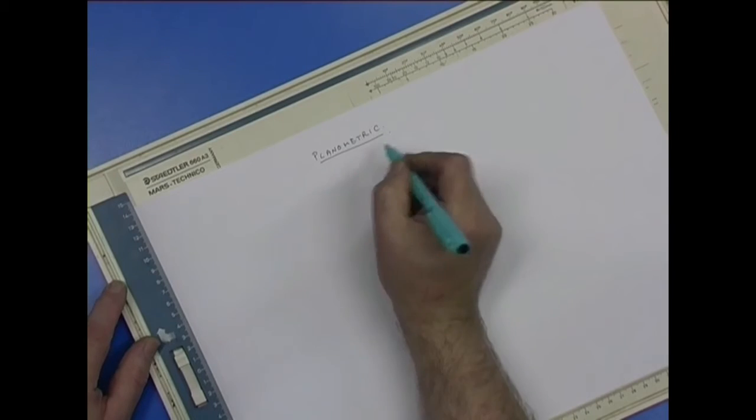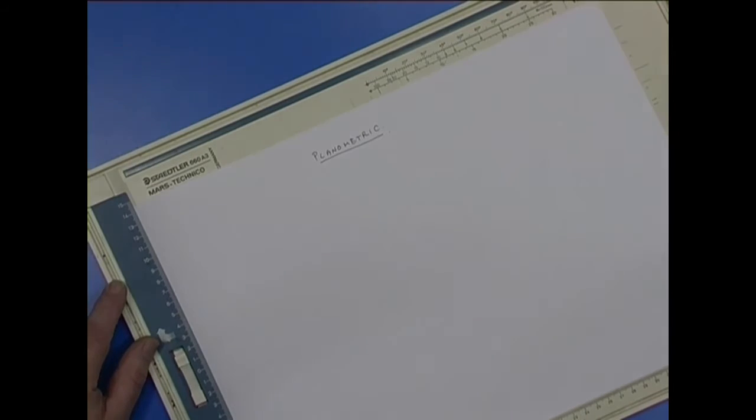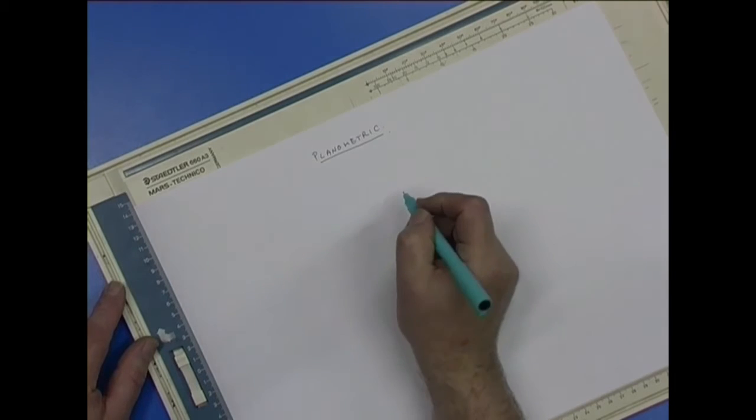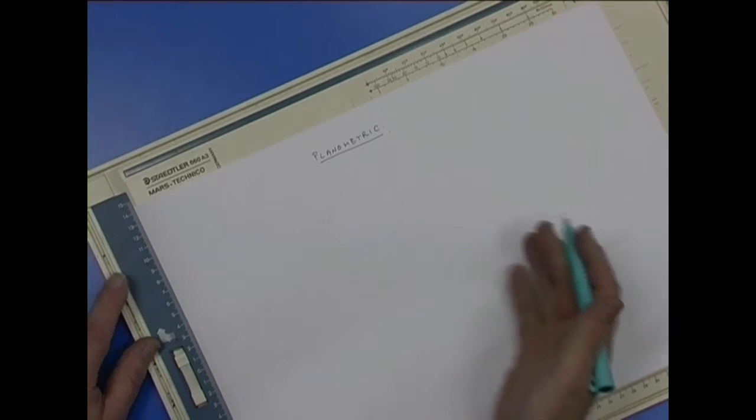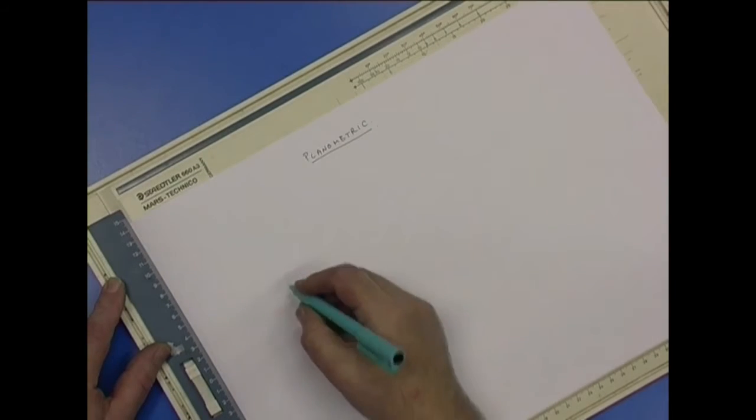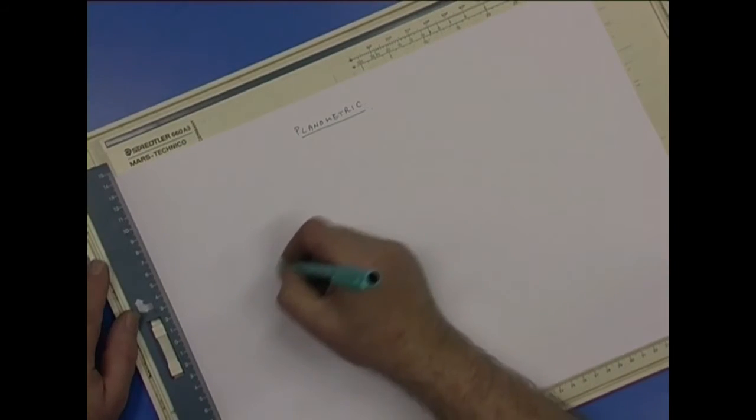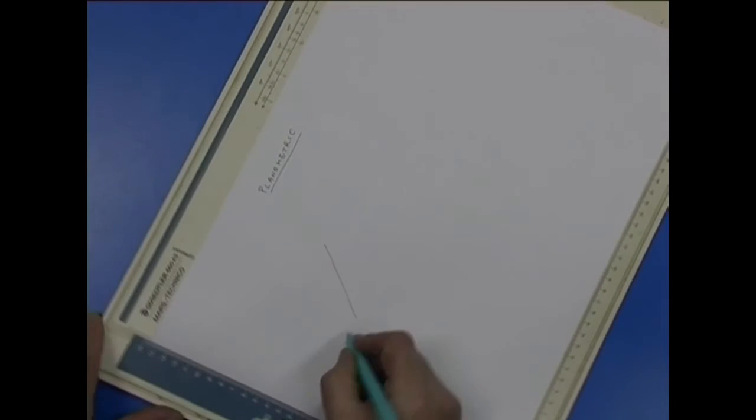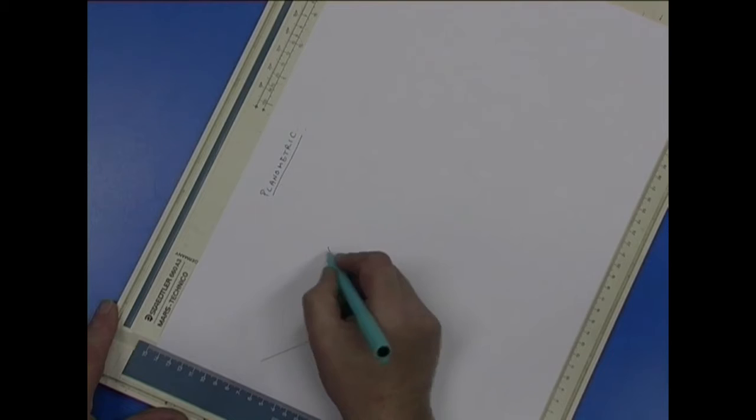A planimetric is where you draw a plan view at an angle, but it's a true plan view, normally of a room or a piece of furniture. We'll draw just a small rectangular room with some furniture in it.